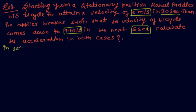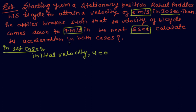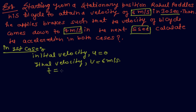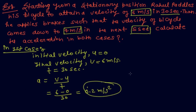In the first case, initial velocity u equals 0 because Rahul starts the bicycle from rest. Final velocity v equals 6 meters per second, and time taken is 30 seconds. So acceleration a equals v minus u by t, which is 6 minus 0 by 30, giving 0.2 meters per second squared. This is the answer for the first case.